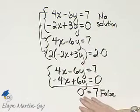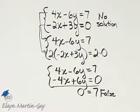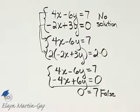Now don't forget, if the variables subtract out and you end up with a true statement, that means the original system has an infinite number of solutions. But here, false statement, that means no solution.